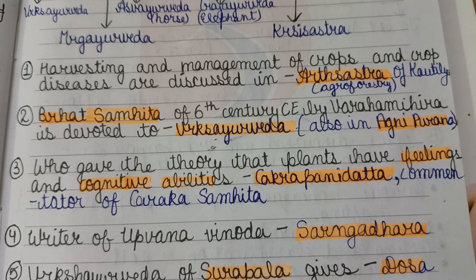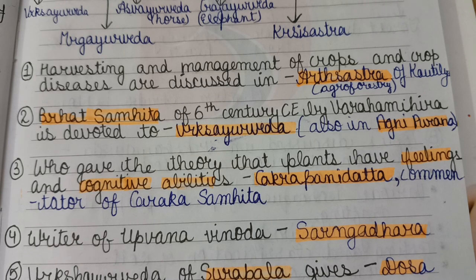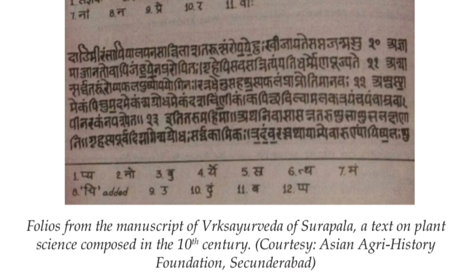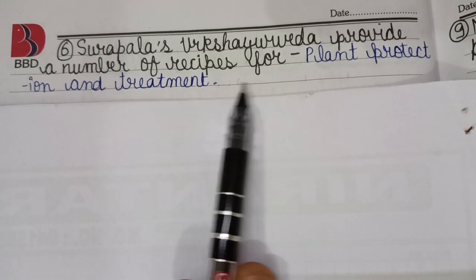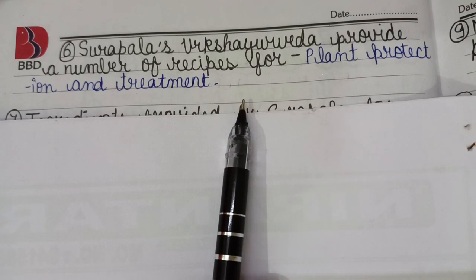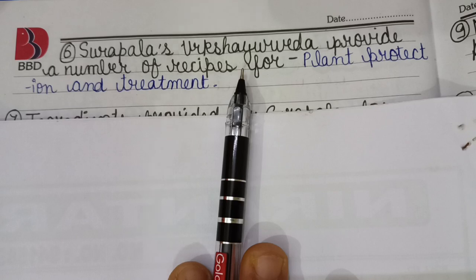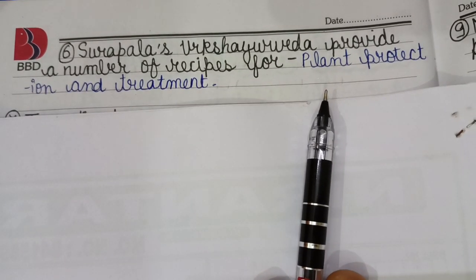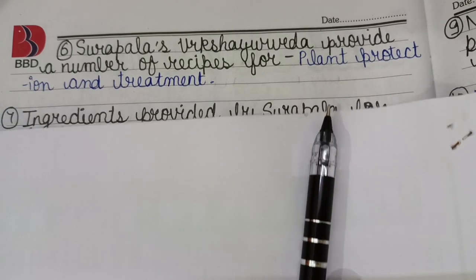Surpala's Vriksha Ayurveda gives the dosa theory to plants. The dosa theory of plants is given by Surpala, and his Vriksha Ayurveda provides a number of recipes for plant protection and treatment.